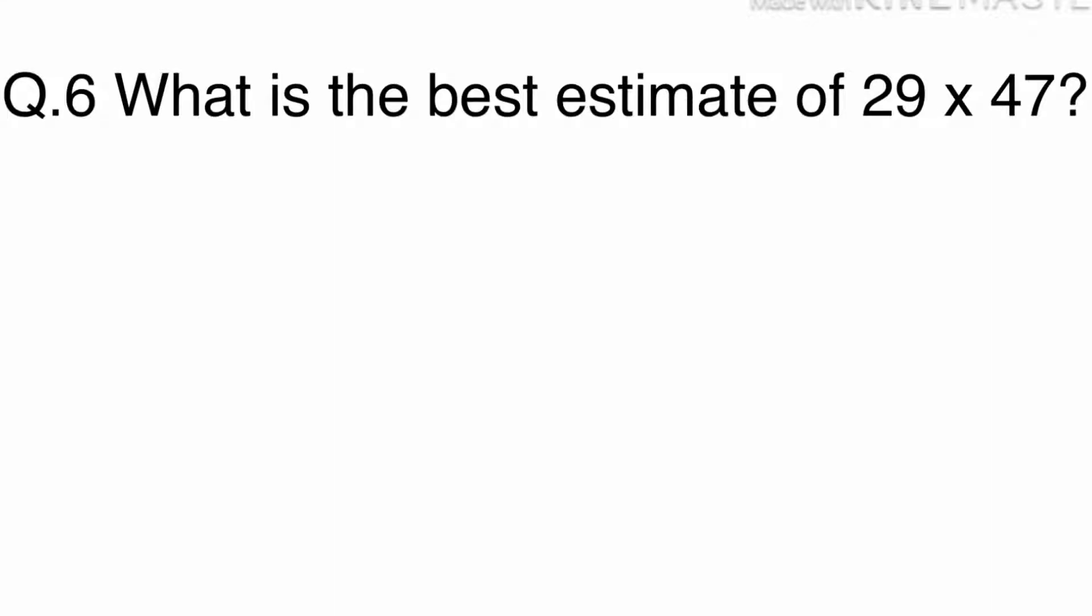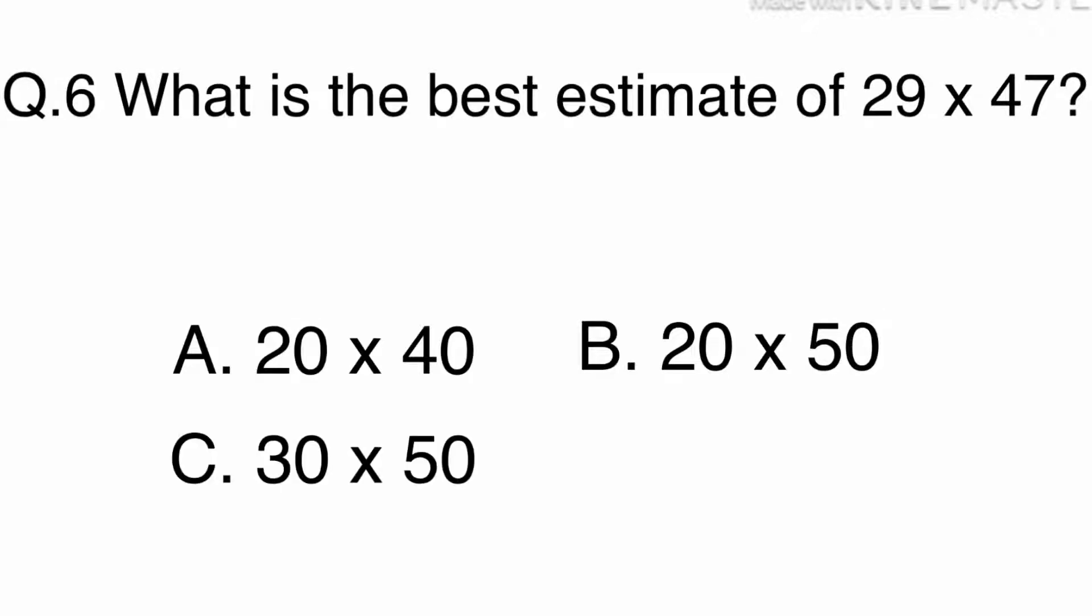Question 6. What is the best estimate of 29 times 47? A. 20 times 40. B. 20 times 50. C. 30 times 50. Or D. 30 times 40.